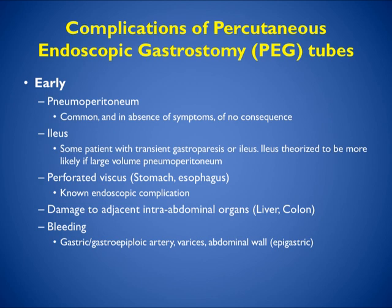Among early complications, pneumoperitoneum is common post-PEG placement and is of no consequence. Some patients will have transient gastroparesis or ileus, which is more likely with large volume pneumoperitoneum. Perforation of the esophagus or stomach is a known complication of any endoscopy. If the PEG tube is placed incorrectly, you can hit the colon, particularly with a high-riding colon, or the liver if its edge extends far to the left. Bleeding from the gastric or gastroepiploic artery, varices, or abdominal wall varices are all possible sites of hemorrhage.